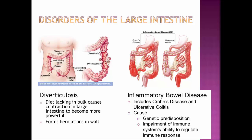A couple of disorders related to the large intestine: one is diverticulosis, which is outpocketing or herniations in the wall of the intestine. If you eat a diet that lacks bulk or fiber, the fecal material in the large intestine is really soupy — think of it like pudding. The intestine tries to push that pudding-like material along, but it's too squishy, so it has to contract harder. That stress literally causes the herniations, called diverticulosis or diverticula.